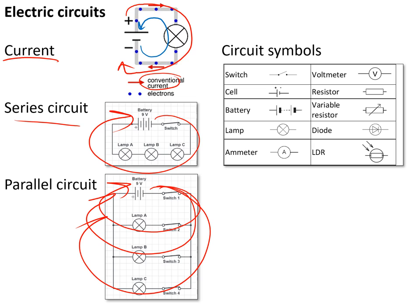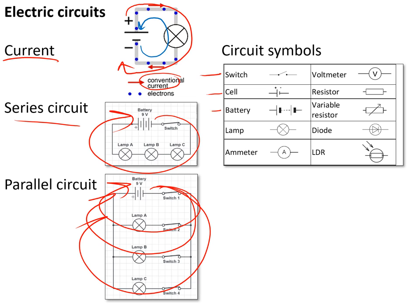Circuits are drawn using circuit symbols. Wires are drawn with a straight line using a ruler, and then we have the symbols you need to know: a switch, a cell, a battery, a lamp, an ammeter, a voltmeter, a resistor, a variable resistor, a diode, and an LDR.